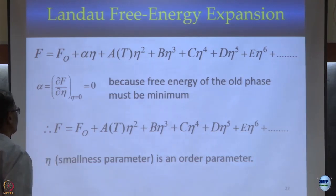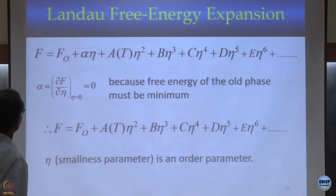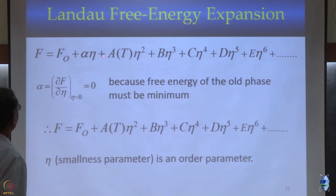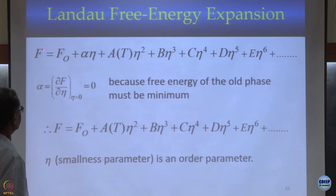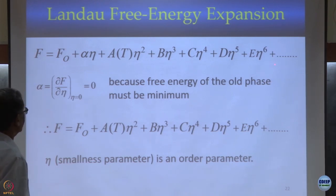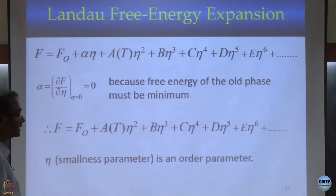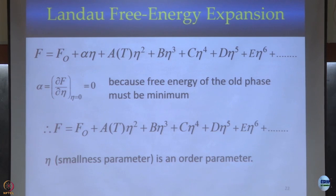But Landau wrote it down — that is perhaps the simplicity that is genius. When you expand like that, η is the order parameter. So I am expanding the free energy in the order parameter. In the old phase the order parameter is 0, so f equals f-naught. My aim is to find a solution of the free energy when η is non-zero. This is the search for a solution — what are the conditions, and where does the answer lie? The answer lies in this branch.